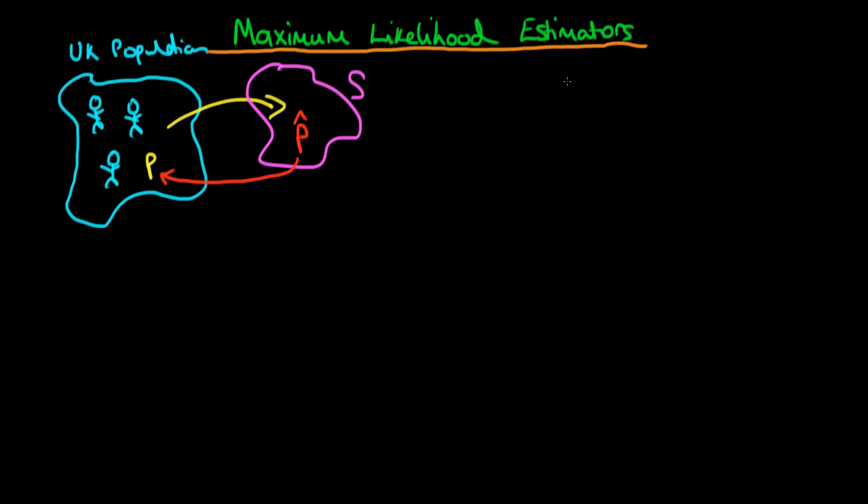We got as far as to talk about the likelihood function, which we found in this case to be the product from i equals 1 to n of P to the power Xi times 1 minus P to the power 1 minus Xi. We spoke about how this likelihood essentially represents the probability that we would have got that sample of individuals if we actually knew the parameter P in the population. But the idea is we don't know the parameter P, and in general it's the thing we're trying to estimate.